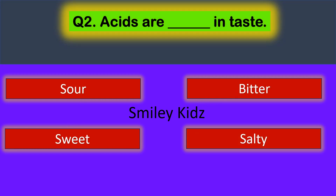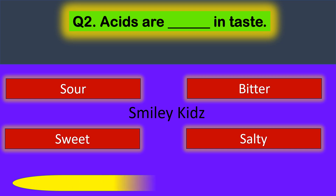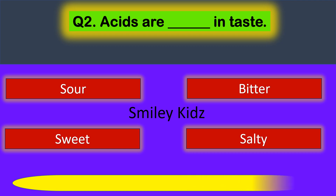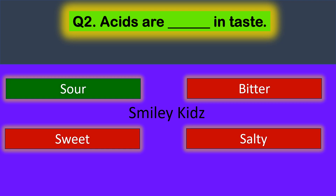Question number two: acids are dash in taste. Your options are bitter, sweet, sour, salty. Your time starts now. The correct answer is sour — acids are sour in taste.